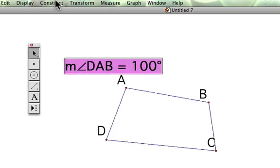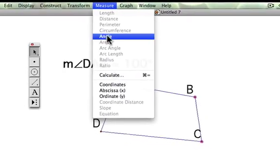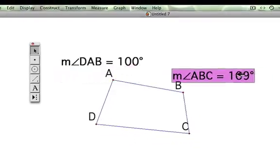We're going to now measure the angle at B, which is angle ABC or CBA, and we're going to measure that angle, and it's 109 degrees.